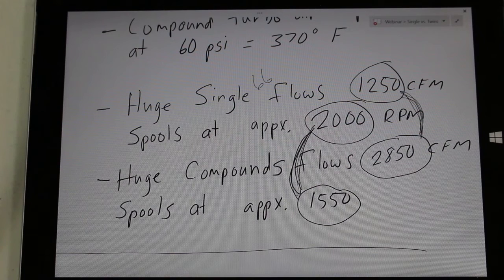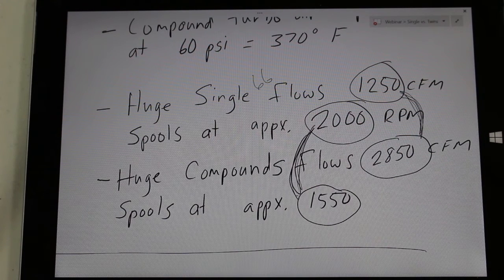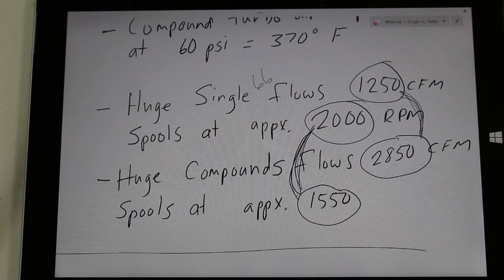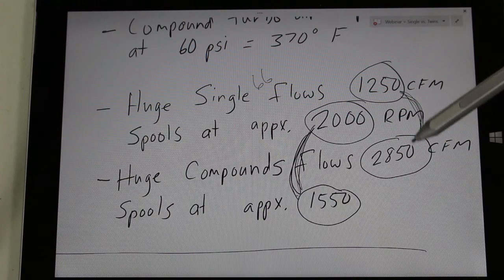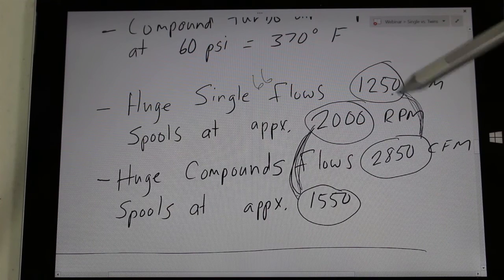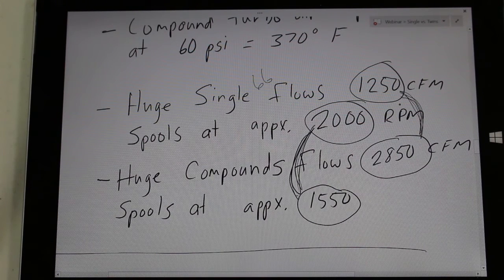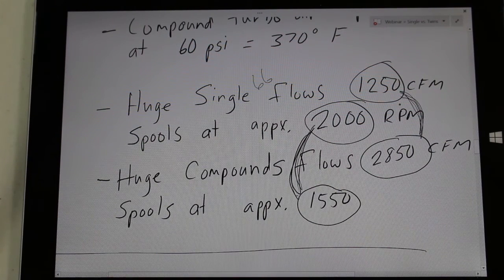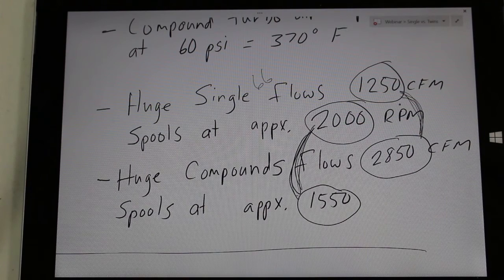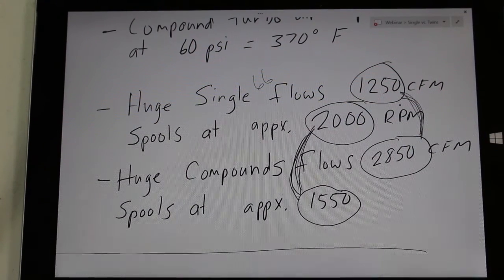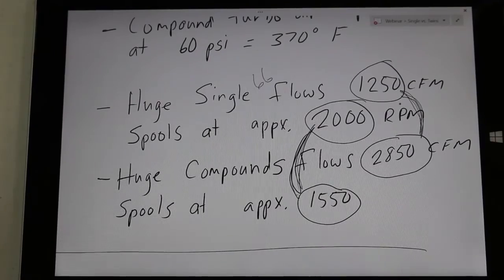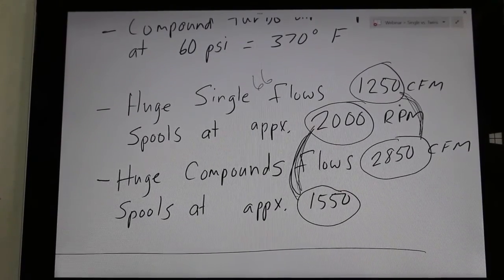You can see by this, there's almost no comparison. You get quicker spool up and over double the airflow from our compound kits compared to a huge single turbo. And this huge single turbo like this is about the biggest turbo you can run on a 5.9 Cummins unless you go into like one of the S400 series. And those are just crazy. Those are like sled pull only. And even those, the compound kits outflow those, the overall airflow on those.